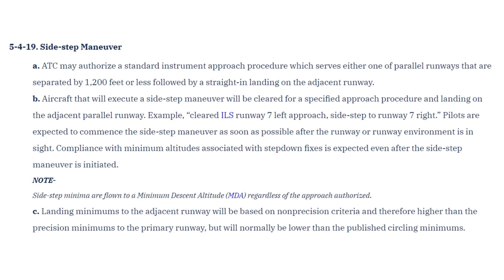The AIM says that ATC can authorize a sidestep maneuver from an approach on a runway to a parallel runway as long as they're separated by 1,200 feet or less. The aircraft will be cleared for a specific approach with a sidestep authorized. So for this airport, it would be: cleared ILS 3-5 right, sidestep to 3-5 left.